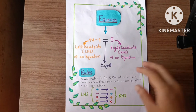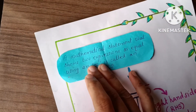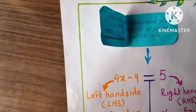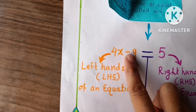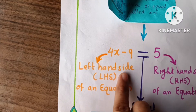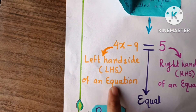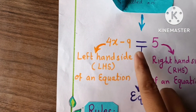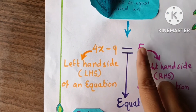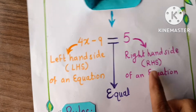The next page is equation — here is the definition of equation. Here is an equation: this side is called the left hand side, what we call LHS of an equation. Then there is the equal sign, and this side of the equation is the right hand side, which we call RHS.